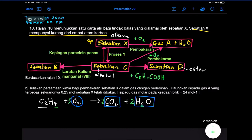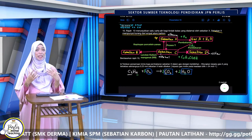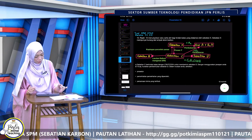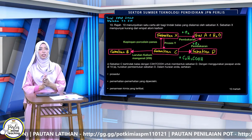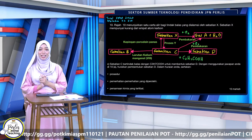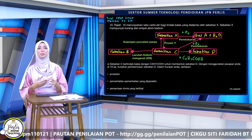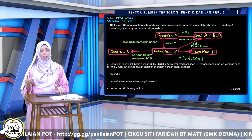Hitungkan isi padu gas A yang terbebas sekiranya 0.25 mol X telah dibakar — dua markah. Cikgu rasa satu markah untuk tulis persamaan kimia, satu markah untuk perhitungan. Cikgu tak tunjukkan markah untuk perhitungan sebab Cikgu nak bincang banyak lagi soalan. Awak boleh cari trial Melaka dan awak buat. Kita tengok apa lagi soalan tanya berkaitan dengan sebatian karbon.